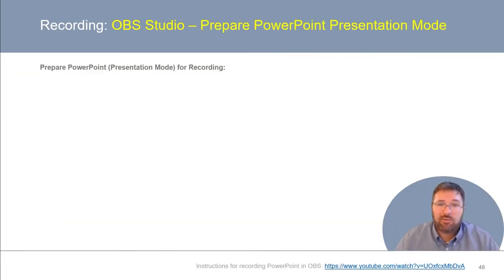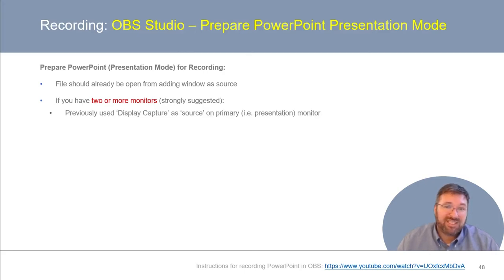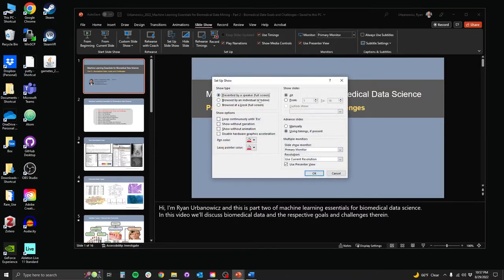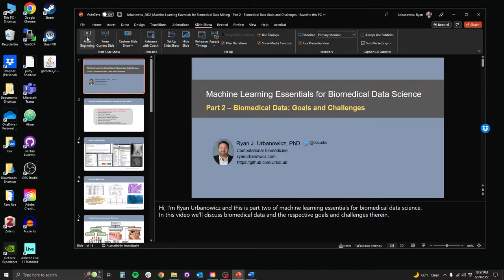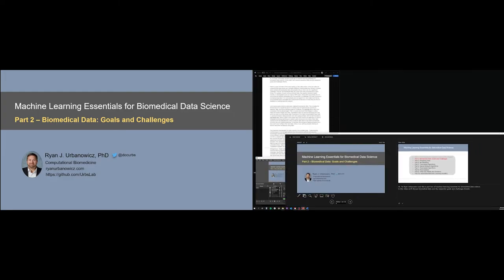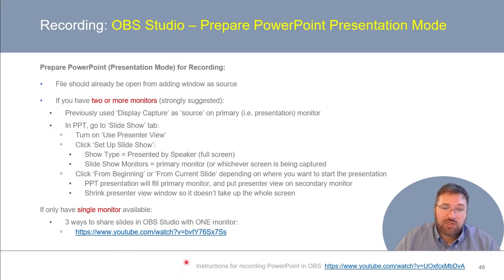Let's briefly review how to set up PowerPoint in presentation mode for recording. Your PowerPoint presentation should be open on your computer. Assuming you have two or more monitors, go to the slideshow tab, turn on Use Presenter View, then click Setup Slideshow. You want your show type to be presented as Speaker Full Screen, and your slideshow monitor to be your primary monitor. Click From Beginning or From Current Slide, and your PowerPoint presentation will fill up your primary monitor, putting presenter view on the secondary monitor. I like to shrink down the presenter view window so it's not taking up the whole screen, while my presentation still takes up my primary monitor. If you only have a single monitor, here are three alternative ways to capture your slides in OBS Studio — and here's another video with instructions for recording PowerPoint in OBS.